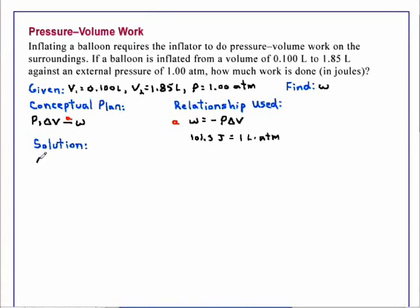We will go ahead and calculate the change in volume. Change in volume is V2 minus V1 is 1.85 liter minus 0.100 liter. And that is 1.75 liter.